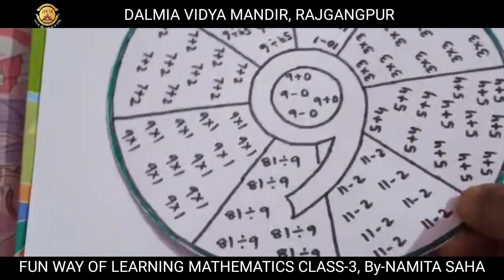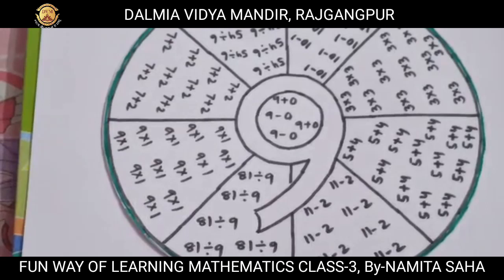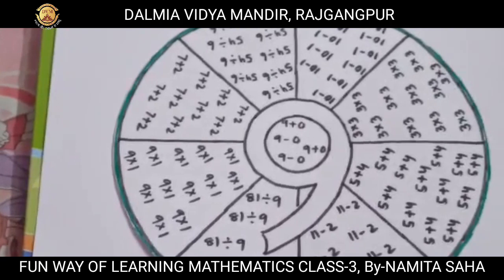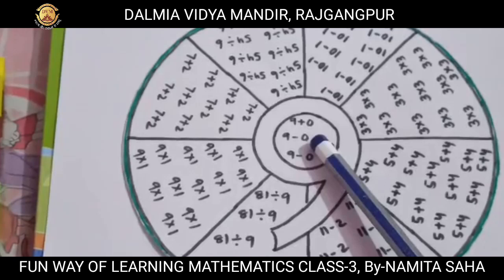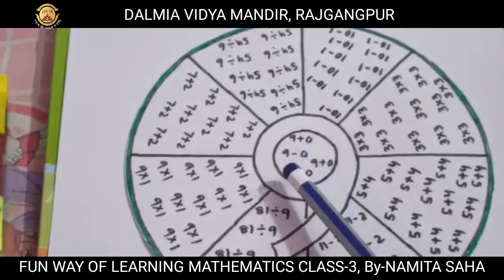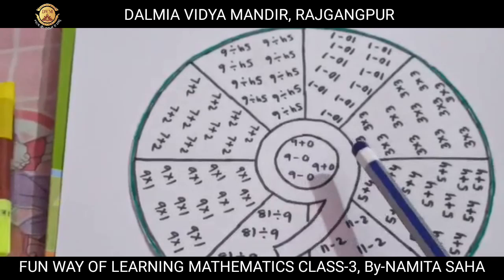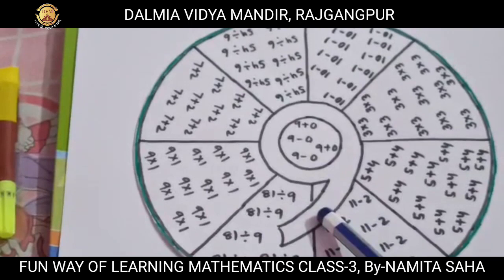After that I have filled the different parts of this circle like this wheel. Children, is it visible clearly? At the center of this circle you can see that I have written 9 plus 0 and 9 minus 0. So what does it mean? 9 plus 0 gives the same value 9, and 9 minus 0 also gives you the value 9. So all of these are nothing but different ways of representing the digit 9.